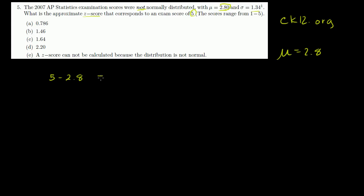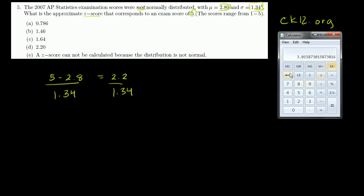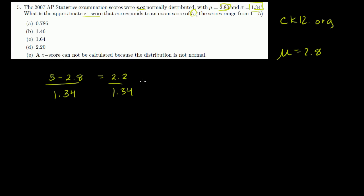So 5 minus 2.8 is equal to 2.2. So we're 2.2 above the mean. And if we want that in terms of standard deviations, we just divide by our standard deviation. We divide by 1.34. I'll take out the calculator for this. So we have 2.2 divided by 1.34 is equal to 1.64.